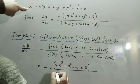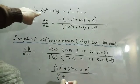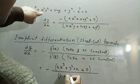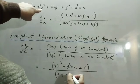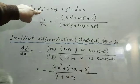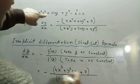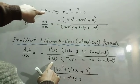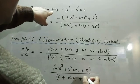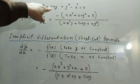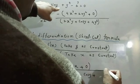The next question, number two, is: y sec x + tan x + x²y = 4. All terms are brought to the left side, so the equation becomes y sec x + tan x + x²y minus 4 = 0, before applying the shortcut formula.